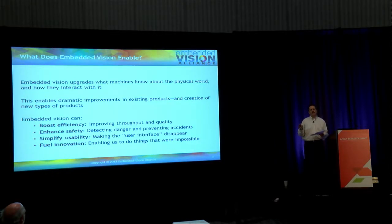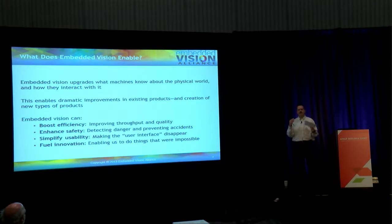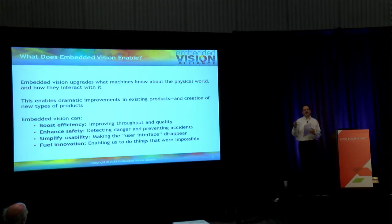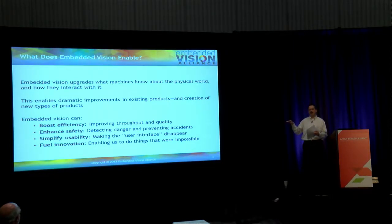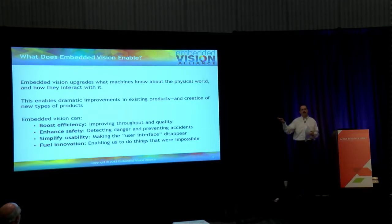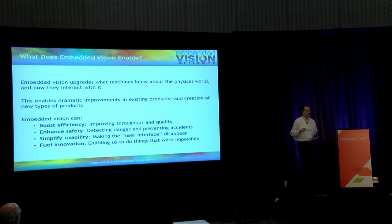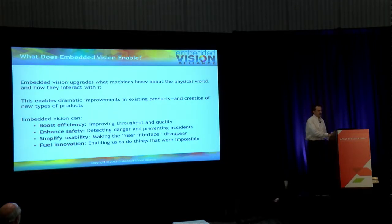I want to convey the idea that vision is really a very general, very powerful capability. You think about what you as a human being do with eyesight — you can recognize somebody across the room, drive a car, thread a needle. Machines can do so many different things through vision. Generally, I find many of them fall into these categories: improving efficiency, like in factory automation or energy management; safety, as in automotive safety systems; and user interfaces, improving usability and more natural interaction. And there are new kinds of things we can do with visually intelligent systems that are not possible or practical to do otherwise.